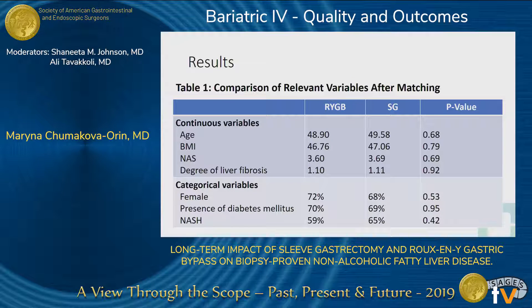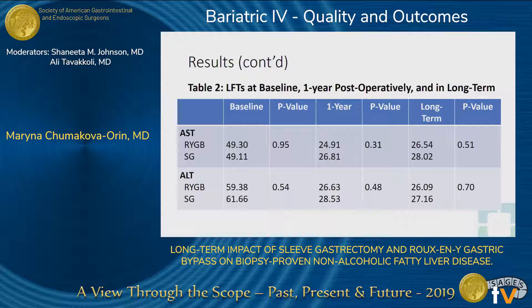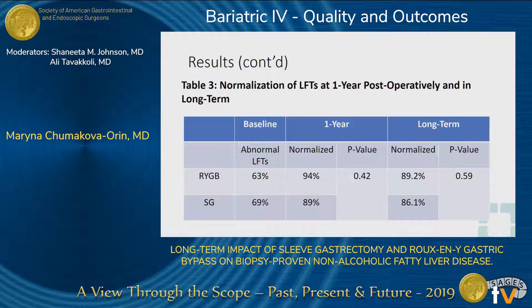The initial table shows variables between the two surgical groups demonstrating no significant difference after matching. The next table shows LFTs drawn at baseline, one-year post-op, and long-term post-op between the two surgical groups, once again demonstrating no significant difference. Looking at normalization of LFTs: 63% of gastric bypass patients had abnormal LFTs pre-op, 94% normalized at one year, and 89% normalized long-term. In the sleeve gastrectomy group, 69% had abnormal LFTs pre-op, 89% normalized at one year, and 86% normalized long-term.